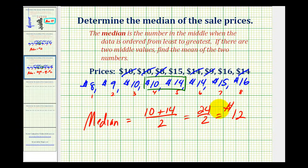Which means twelve dollars is the value in the middle of all of the given sale prices. And in this case, half of the prices would be above twelve dollars and half would be below twelve dollars. I hope you found this helpful.